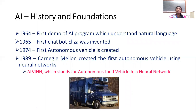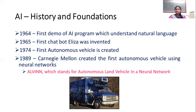In 1964, the first demo of an AI program that understands natural language was presented. In 1965, a chatbot with voice command response was introduced. Then the first autonomous vehicle — a self-driving car — started development, and in 1989, the first autonomous vehicle using a neural network system was developed.